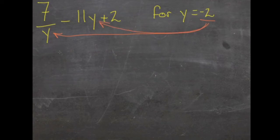When we rewrite the expression, it looks like this: 7 divided by negative 2 minus 11 times negative 2 plus 2.